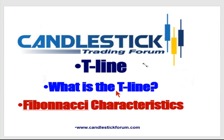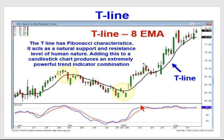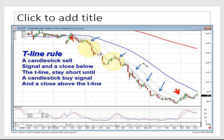Here's a very simple rule: if you see a candlestick buy signal and a close above the T-line, you can stay long until you see a candlestick sell signal and a close below the T-line. Conversely, if you see a candlestick sell signal and a close below the T-line, you can stay short until you see a candlestick buy signal and a close back up above the T-line. Don't take my word for it — put it on your charts.